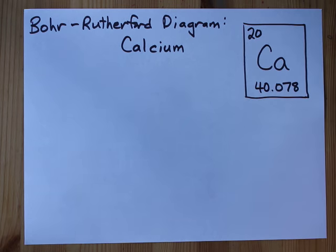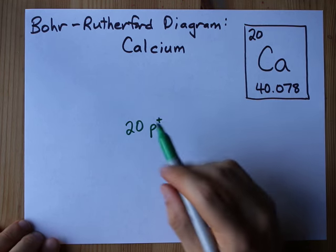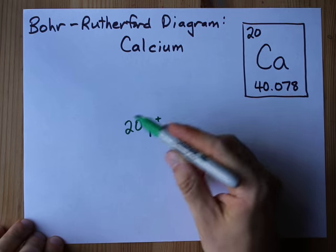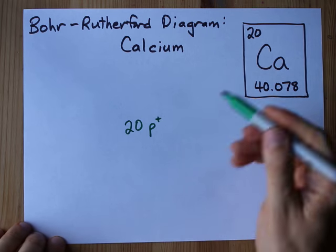The atomic number is the same as the number of protons, so write it down in the very center. Try not to make it too big. This is going to be the very center of your diagram. 20 protons, check.